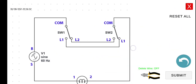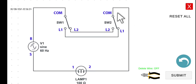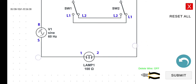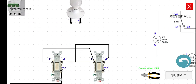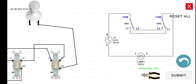We are going to connect the common of switch two to the second terminal of lamp one. The common of switch two to the second terminal of lamp one. And then we are going to connect the first terminal of lamp one to the S terminal of the circuit breaker.